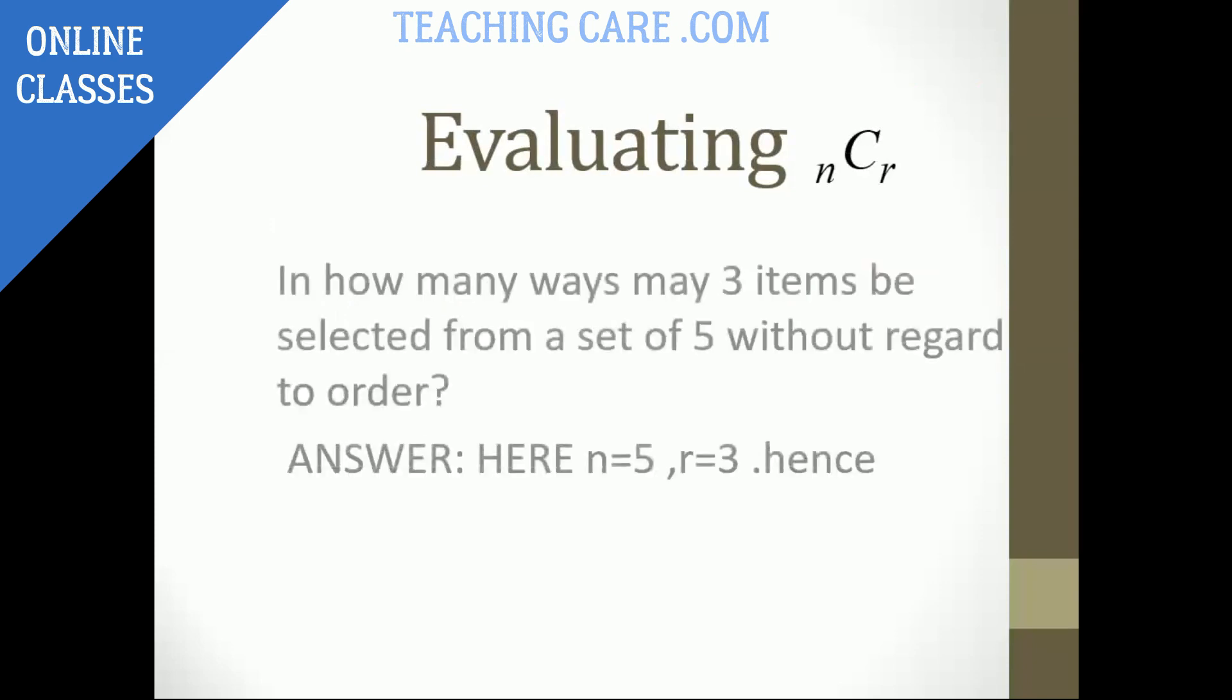So, what is the definition? Number of combinations of N elements taken R at a time where order is not important. So we are going to calculate the problem here. In how many ways may 3 items be selected from a set of 5 without regard to order? It's NCR. N is equal to 5, R is equal to 3.